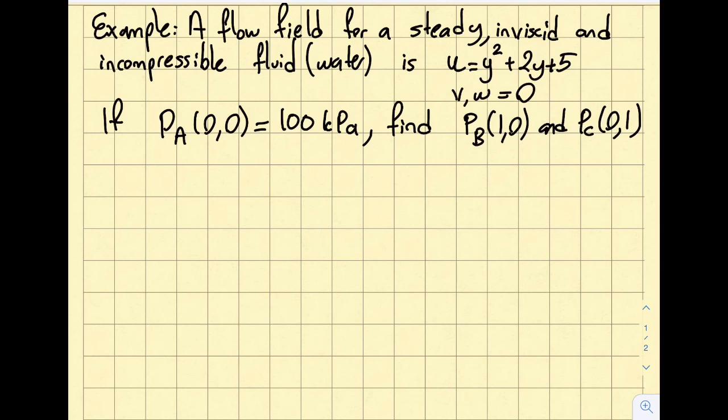If Pa at the origin is 100 kPa, find Pb where x equals 1, y equals 0, and Pc where x equals 0, and y equals 1.